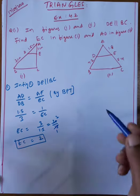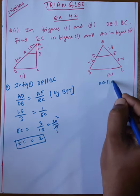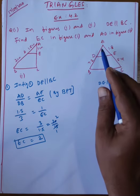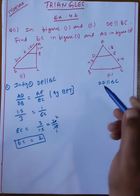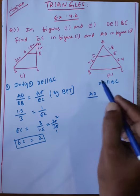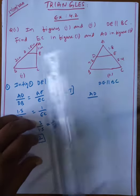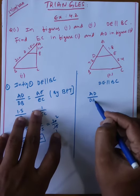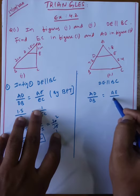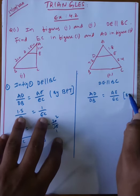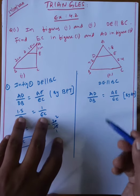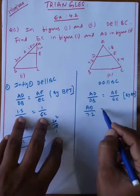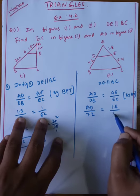Now we go to the second problem. In figure 2, DE is parallel to BC is given. Applying the basic proportionality theorem, AD by DB equals AE by EC. AD by DB means 7.2, which equals AE 1.8 by 5.4.